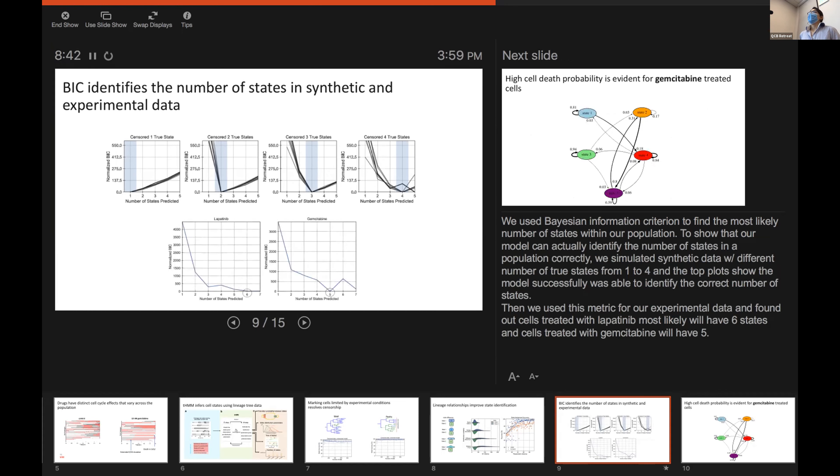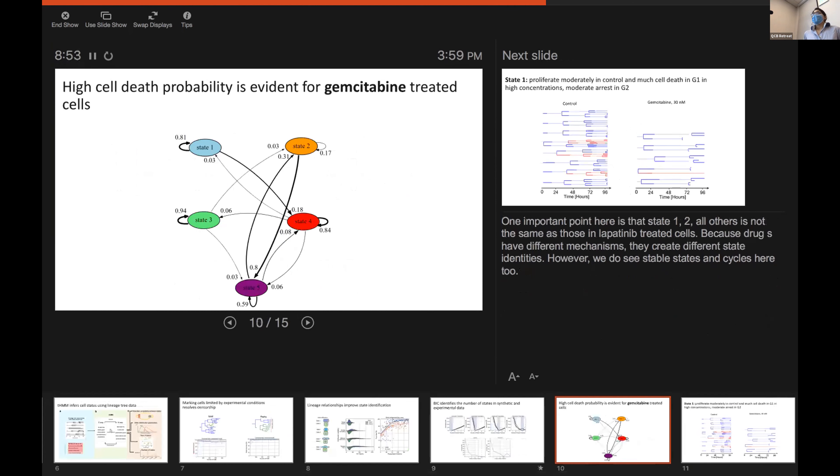We used the same metric for our experimental data of lapatinib and gemcitabine treatments. And in lapatinib, you see that our model picked six and for gemcitabine five. In the interest of time, I'm going to just talk about the gemcitabine treatment analysis.